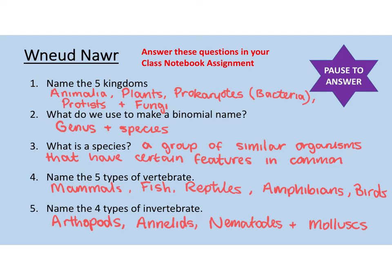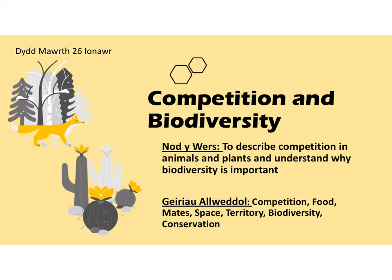Okay, so if you got all of those, give yourself a tick and a mark out of five, and we'll move on to today's lesson. Today the lesson is about competition and biodiversity. Your learning objective for today is to describe competition in animals and plants and understand why biodiversity is important. The keywords for today are competition, food, mates, space, territory, biodiversity, and conservation. These are important words we're going to use in today's lesson.